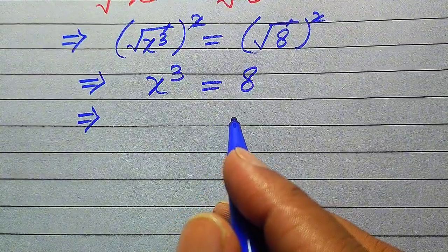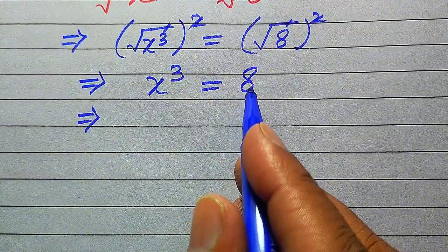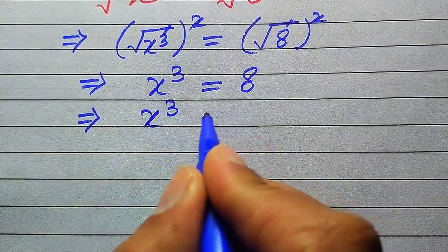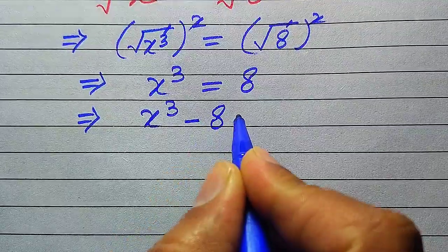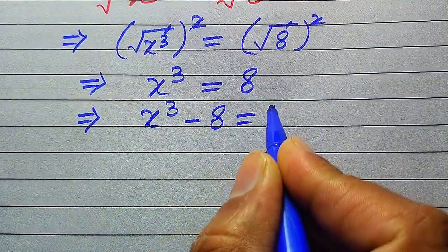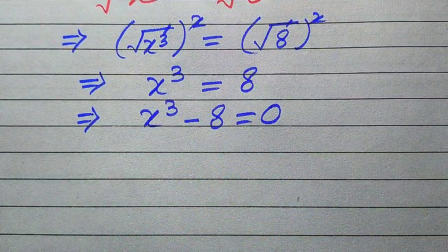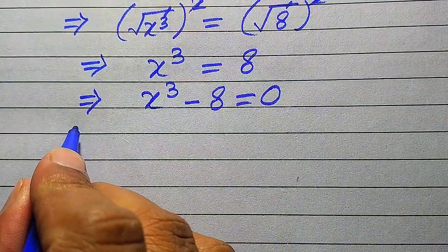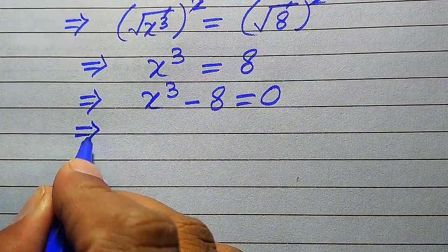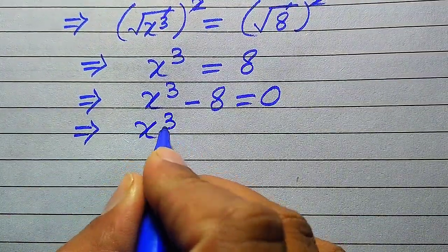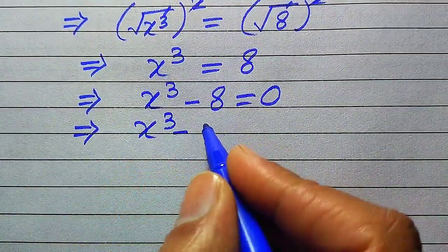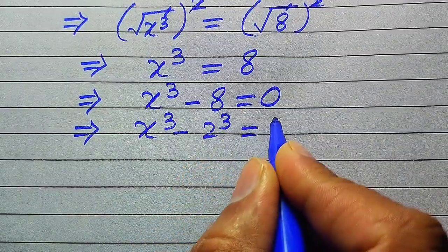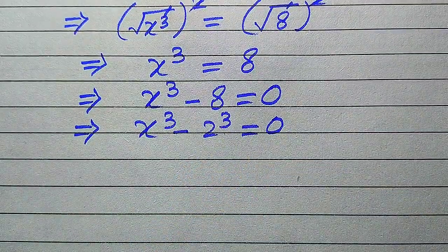First we move 8 from the right-hand side to the left-hand side, so it becomes x cubed minus 8 equals 0. We then rewrite 8 as 2 cubed, giving us x cubed minus 2 cubed equals 0.